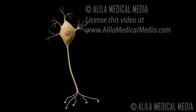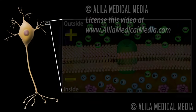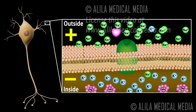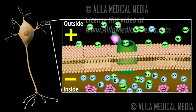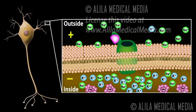A neuron is typically stimulated at dendrites, and the signals spread through the soma. Excitatory signals at dendrites open ligand-gated sodium channels and allow sodium to flow into the cell. This neutralizes some of the negative charge inside the cell and makes the membrane voltage less negative. This is known as depolarization, as the cell membrane becomes less polarized.